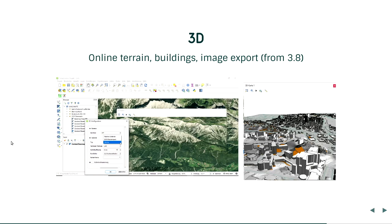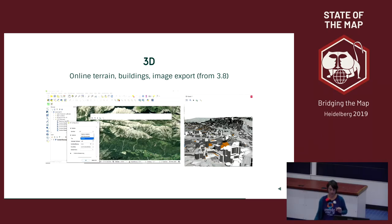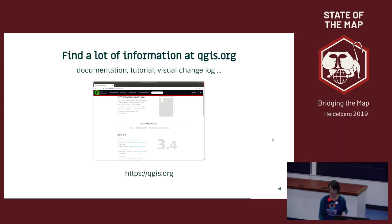QGIS also has 3D functionality in core — no plugin needed. You can access online terrain data, load buildings, and export images. You can load your OpenStreetMap data, define or choose the height of buildings to visualize them, and then use the 3D viewer to make a journey through the scene.